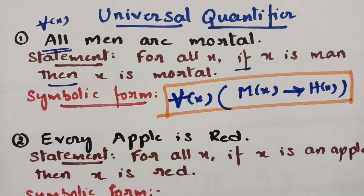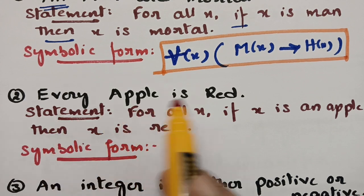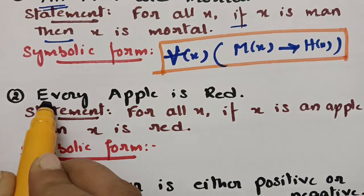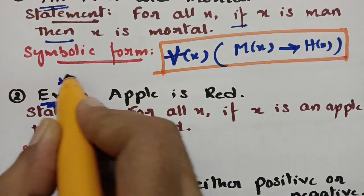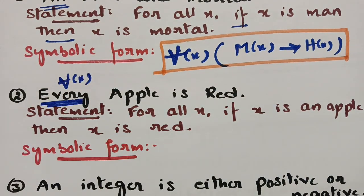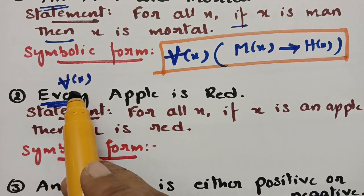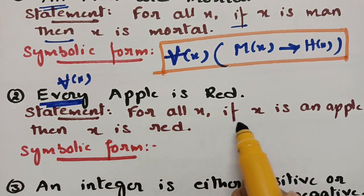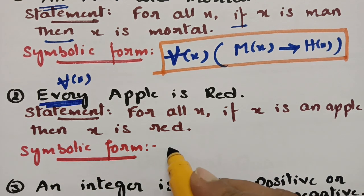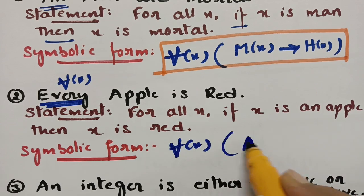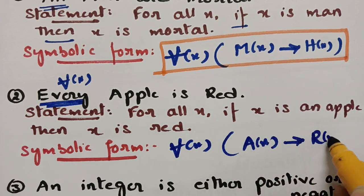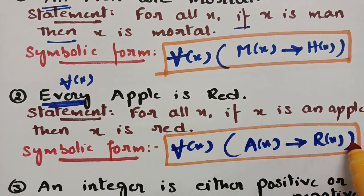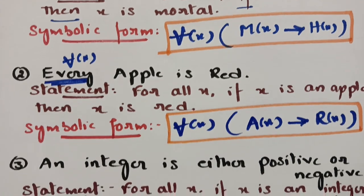The next example is 'Every apple is red.' The word 'every' indicates a universal quantifier. The statement becomes: for all x, if x is an apple then x is red. Symbolically we write: ∀x, A(x) → R(x), where A(x) means 'x is an apple' and R(x) means 'x is red in color'.